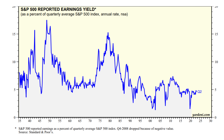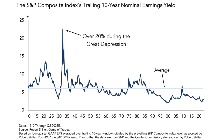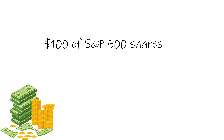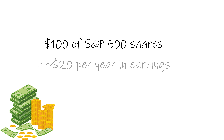Here's the nominal S&P 500 earnings yield going back to 1935. The long-term average is about 5%. There were extreme times such as the Great Depression when earnings yields spiked to between 20% and 30%, depending on how earnings were smoothed for that period. To put that into perspective, for every $100 of S&P 500 shares bought during this period, those businesses were producing about $20 of profit per year.